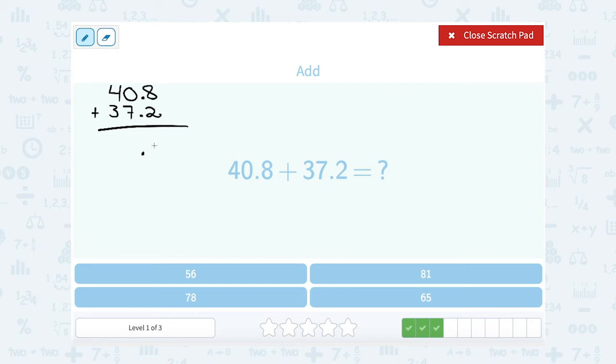8 plus 2 gives me 10, so I'm going to write my 0, carry the 1. 7 and 1 gives me 8. And 4 plus 3 gives me 7. So I wind up with 78.0, which is the exact same thing, it's just 78.